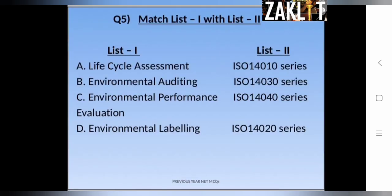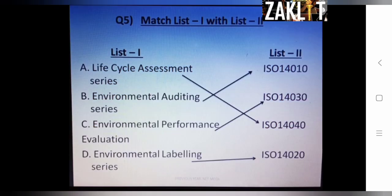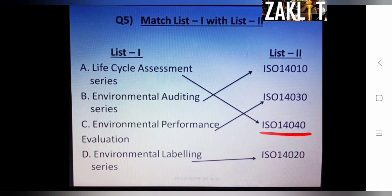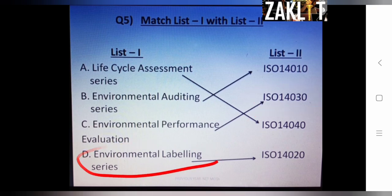The fifth question is a match-the-following. List one includes types of environmental auditing, environmental performance evaluation, and environmental labeling; list two has ISO series codes. The life cycle assessment series is ISO 14040, environmental auditing series is ISO 14010, environmental performance evaluation is ISO 14030, and environmental labeling series falls under ISO 14020.